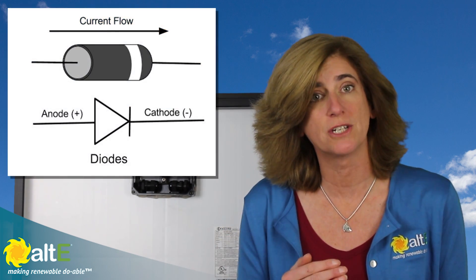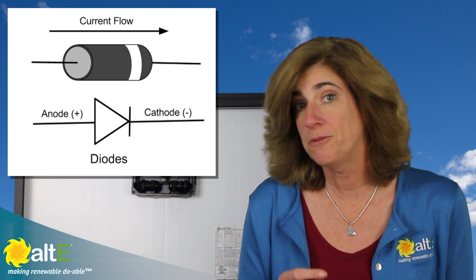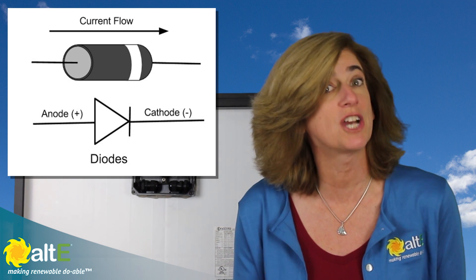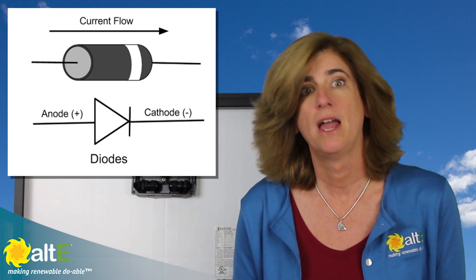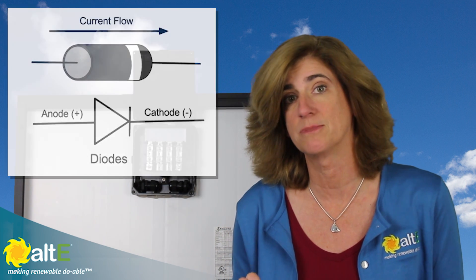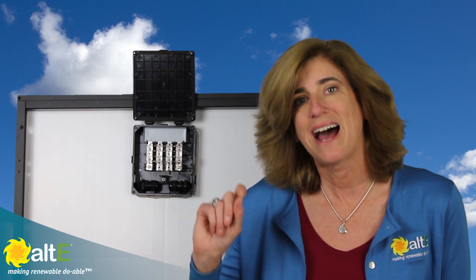A diode is designed to let current flow in one direction. If you're familiar with plumbing, a diode is the electrical equivalent to a check valve. There are two purposes of diodes in solar electric systems: bypass diodes and blocking diodes. The same type of diode is generally used for both — a Schottky barrier diode — but how they're wired and what they do is what makes them different.